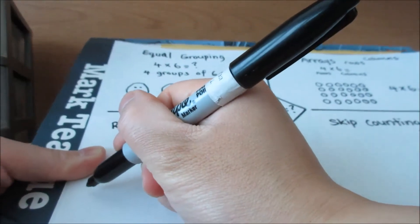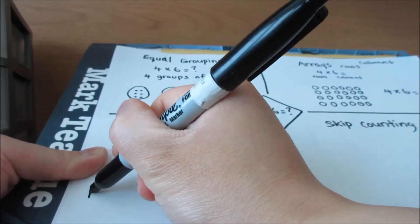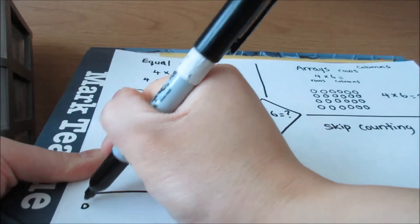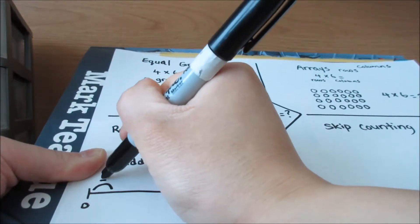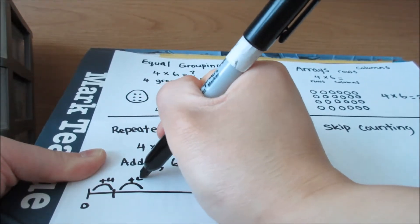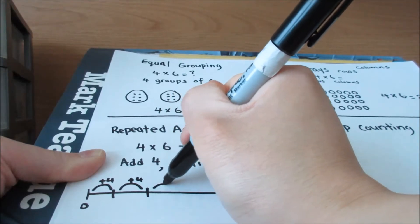I'm going to draw a number line. My number line starts with 0. I'm going to add 4 one time. Second time. I'm going to add 4 again.